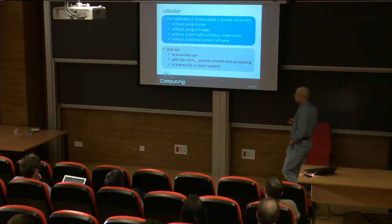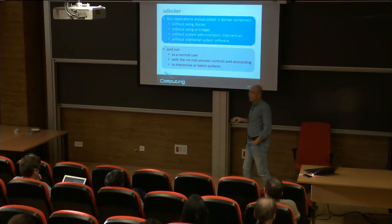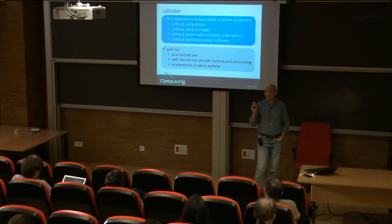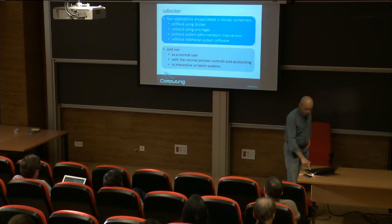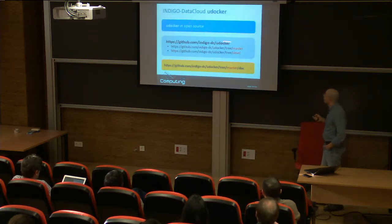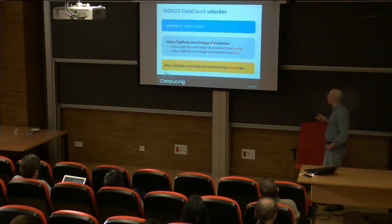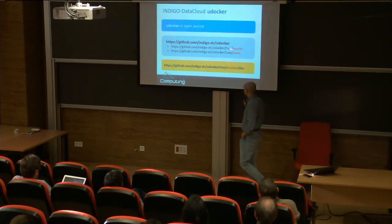You can run as a normal user and have the same process controls and accounting as you normally have. So you can run in batch systems, in HPC systems, whatever. It is available as open source on GitHub. Under the Indigo DC organization — just search for uDocker and you'll find it.